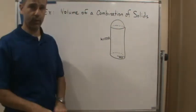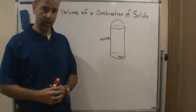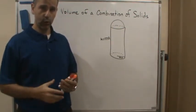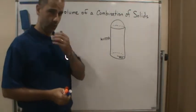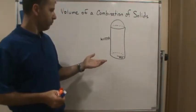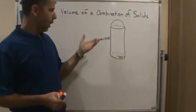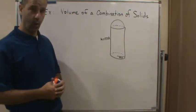Okay, so now in this example, we're going to talk about combinations of solids and finding the volumes of them. In this example, we have a silo, a grain storage building, and we want to find out how much grain will this thing hold.